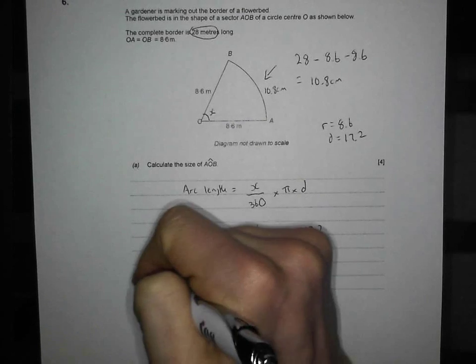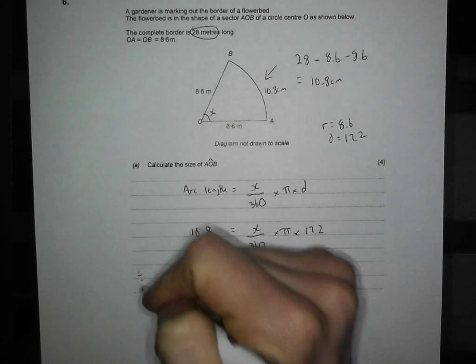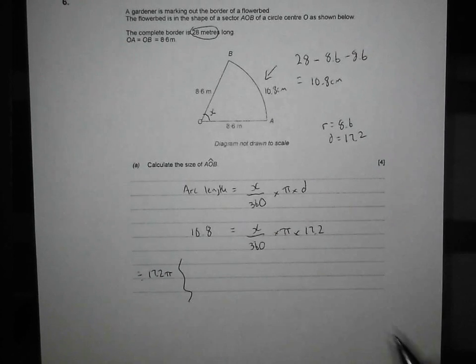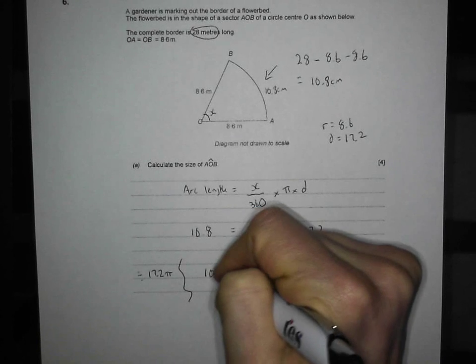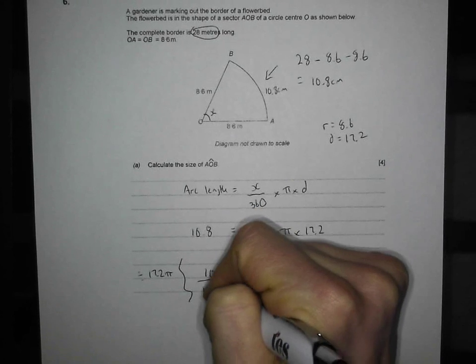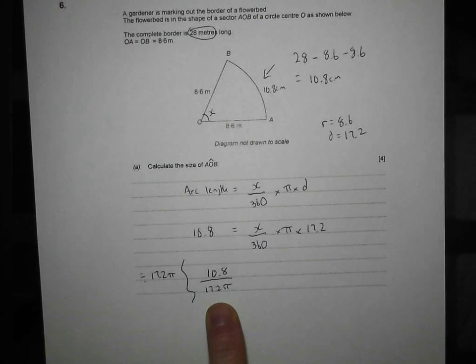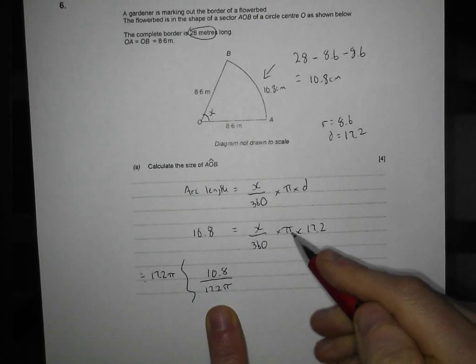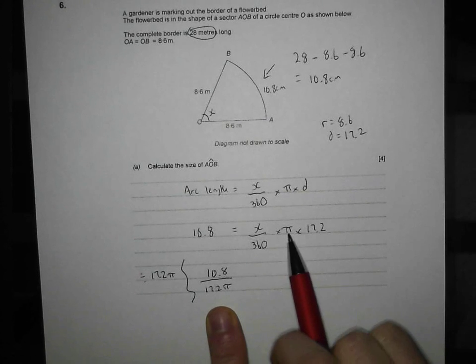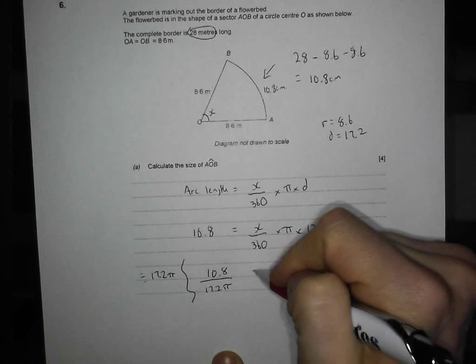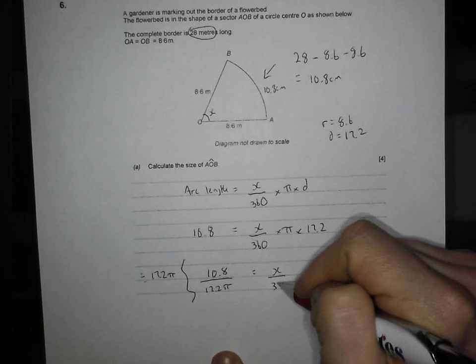And I'm going to do that by dividing by 17.2 lots of pi. So I'm going to get 10.8 and I'm going to divide this side by 17.2 lots of pi. Or you can write that as 17.2 times pi. It doesn't matter, but I treat pi just like I would algebra there. That's 17.2 lots of pi. So divide it by that and that's going to leave me with x over 360 degrees.